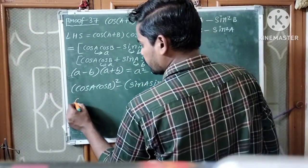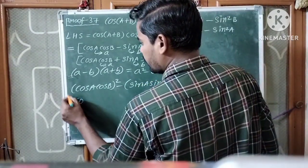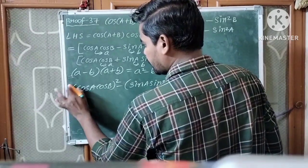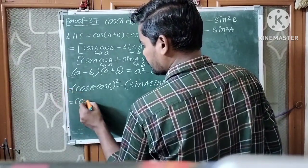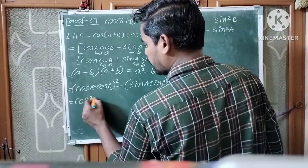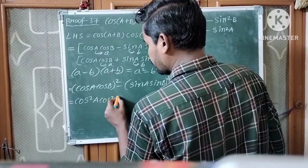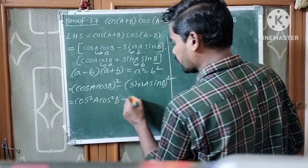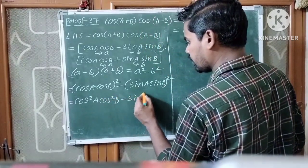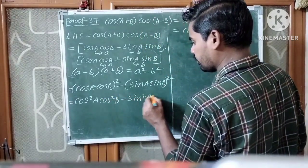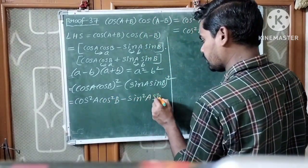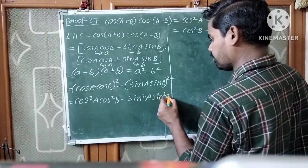So it can be rewritten as cos²A·cos²B minus sin²A·sin²B.